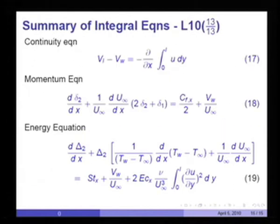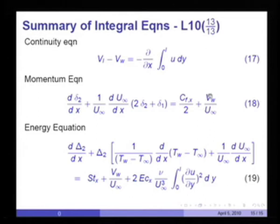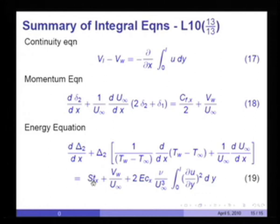To summarize: the integral continuity equation gives v_L - vw = -d/dx of the integral of u dy. The integral momentum equation gives the variation of d(delta_2)/dx accounting for wall velocity. The integral energy equation gives the rate of change of enthalpy thickness Delta_2, accounting for wall temperature variation, free stream variation, wall velocity, and viscous dissipation. Our interest is always to determine St_x and C_fx. In the next lecture, we will solve the velocity boundary layer equations in their integral form. Thank you.